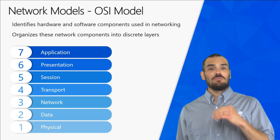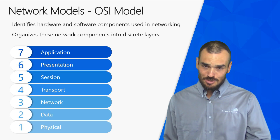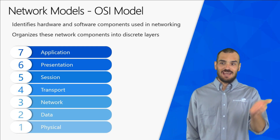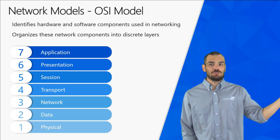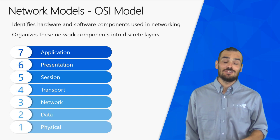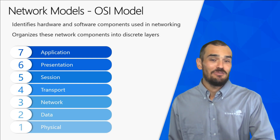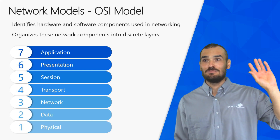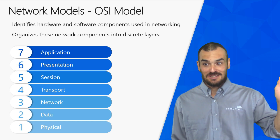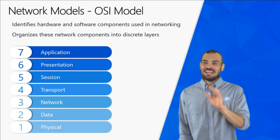If you're going from layer one up to layer seven, use: Please Do Not Throw Sausage Pizza Away — Physical, Data Link, Network, Transport, Session, Presentation, and Application. Trust me, you'll remember those two forever — I don't want to say how long it's been, and I still remember them.